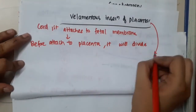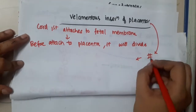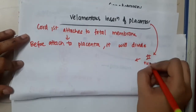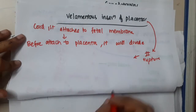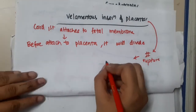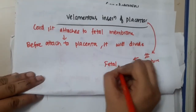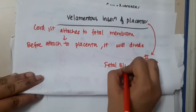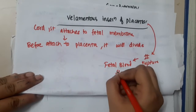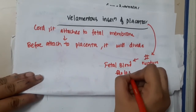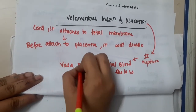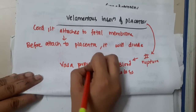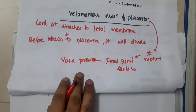If there is any rupture to this velamentous insertion of placenta, it causes fetal blood loss, thus leading to vasa previa. Vasa previa is seen in velamentous insertion of cord.